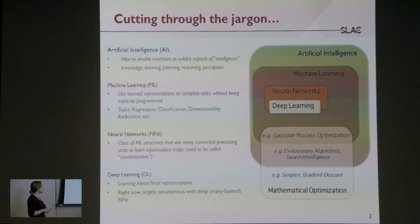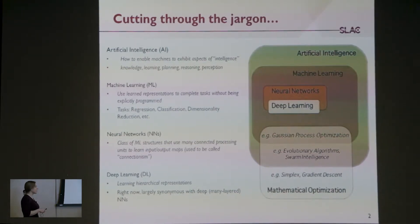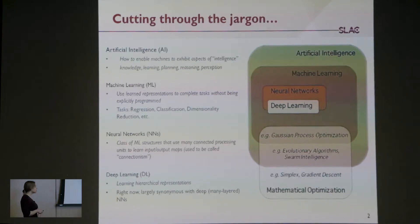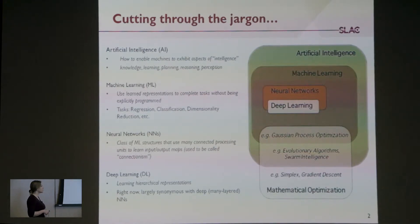Within machine learning, you're typically trying to figure out how to complete some specific task without explicitly telling the program how to do it. This encompasses tasks like regression and classifying different objects. Within machine learning, you have neural networks, which is really just one particular tool. At the highest level, neural networks involve using many different individual functions connected together to process input-output data. Within neural networks, you have deep learning, which right now is pretty synonymous with using deep — many-layered — neural networks, where you're learning hierarchical representations of the data.